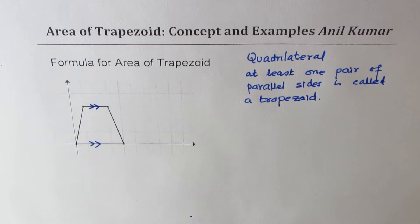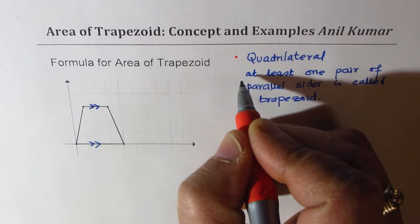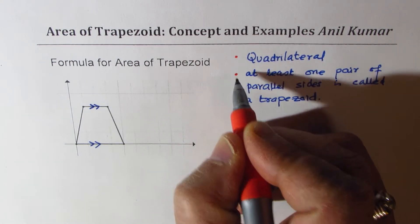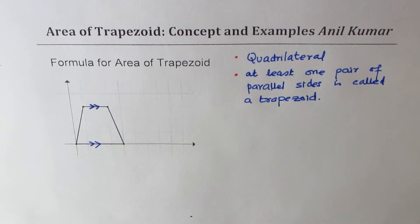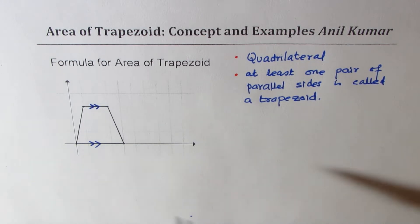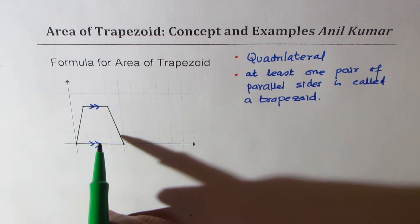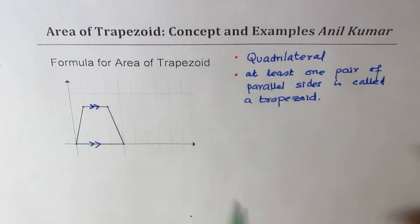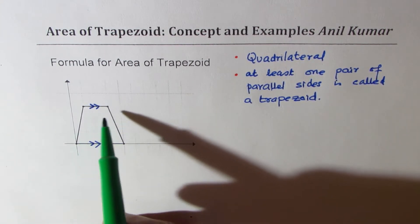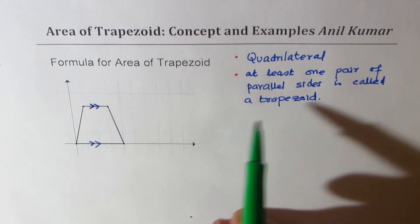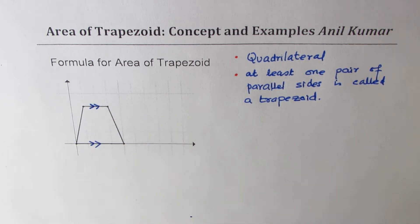So why am I saying at least one pair? It can have two pairs of parallel sides, like a rectangle also. So a rectangle will become a very special trapezoid. What you can say from here is that a rectangle is a trapezoid, but all trapezoids are not a rectangle. Even a parallelogram is a trapezoid.